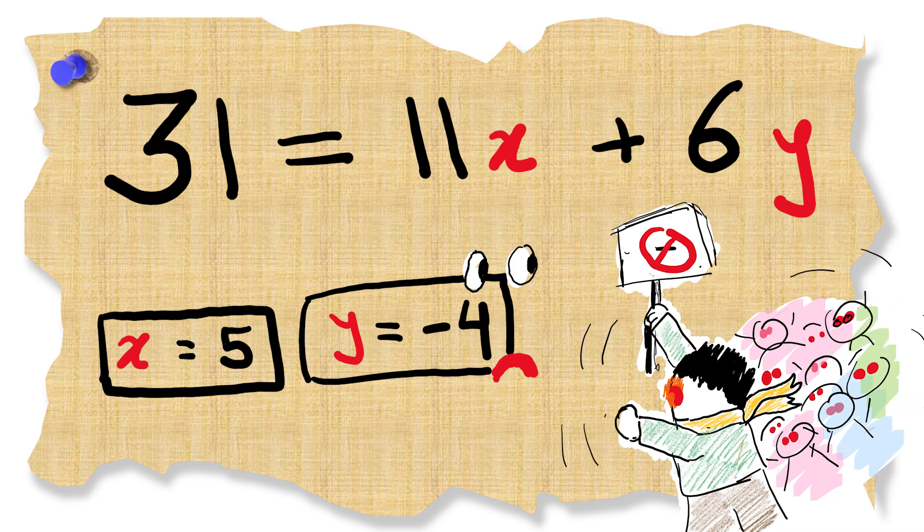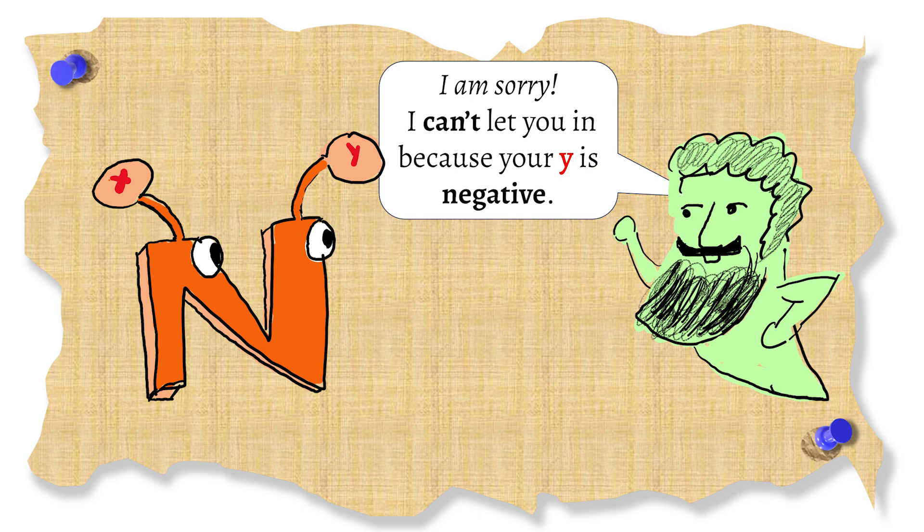Such heresy! So anytime our algorithm outputs a negative value for y we will know that for that n we cannot express it as a sum of coins.